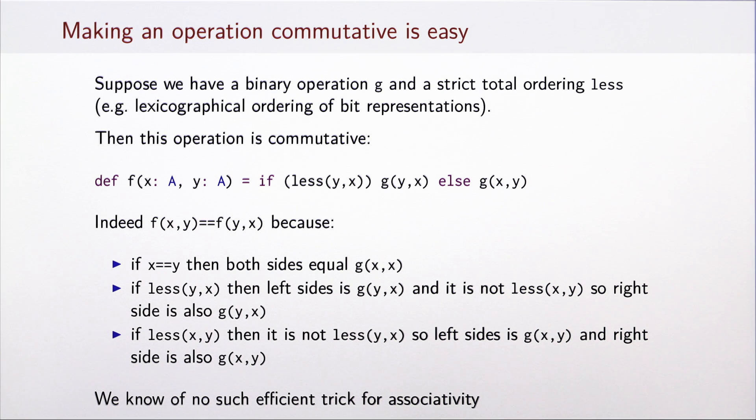The previous operations were, in fact, commutative. So it is interesting to think why it was possible to make such approximate operations commutative, yet the designers did not succeed in making them associative. Well, it turns out to be much easier to make an operation commutative.